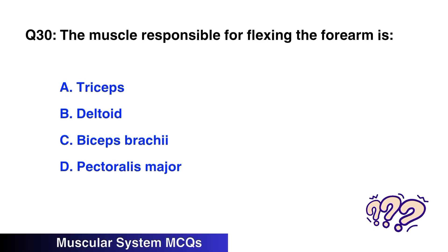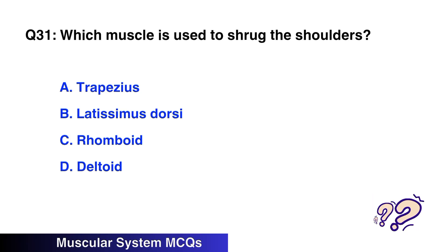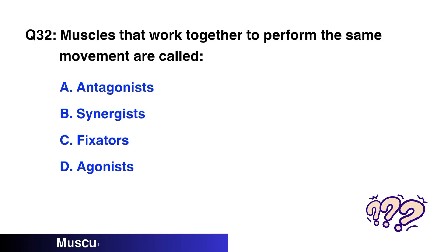Question No. 30: The muscle responsible for flexing the forearm is — the right option is C: Bicep Brachii. Question No. 31: Which muscle is used to shrug the shoulders? The right option is A: Trapezius.